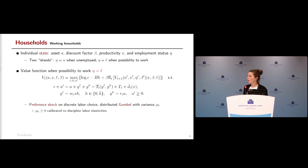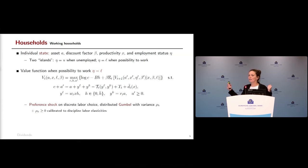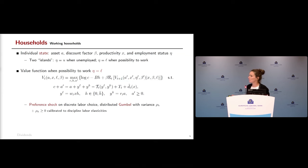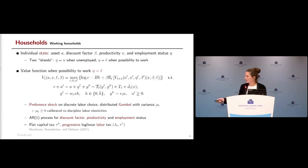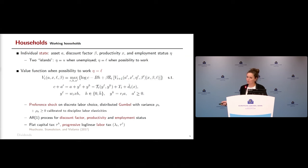We add a preference shock on the discrete labor choice distributed Gumbel with variance rho_h. This variance disciplines the sensitivity of labor supply responses: large rho_h means labor decisions are driven by the preference shock, making them independent of economic conditions and pushing labor elasticities toward zero. When rho_h goes to zero, labor supply decisions are fully determined by wages and tax rates, generating large labor elasticities. We also have standard AR(1) processes for the discount factor, productivity, and employment status, which is exogenous.